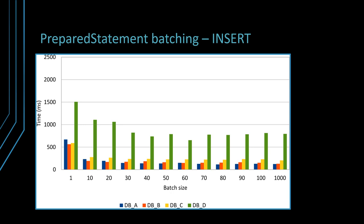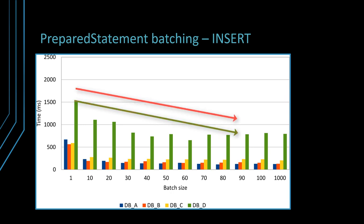Just like for the JDBC Statement test case, the same amount of data — 1000 posts and 4000 comments — is going to be inserted, updated, and deleted while varying the batch size. The graph scale is identical to the one used for plain JDBC statements, so right from the start you can see that the performance is much better when batching PreparedStatements.